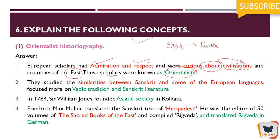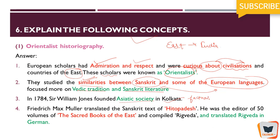The Orientalists had admiration, respect, and curiosity about Eastern civilization. They studied the similarities between Sanskrit and some European languages, and were focused more on Vedic traditions and Sanskrit literature. In 1784, Sir William Jones founded the Asiatic Society in Kolkata.